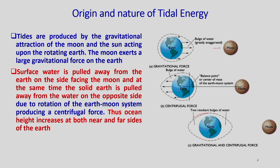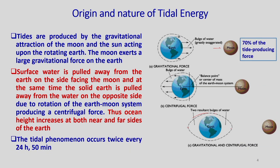Surface water is pulled away from the earth on the side facing the moon, and at the same time the solid earth is pulled away from the water on the opposite side due to the rotation of the earth-moon system, producing a centrifugal force. This causes ocean height to increase at both the near and far sides of the earth. Tidal phenomena occur twice every 24 hours and 50 minutes.